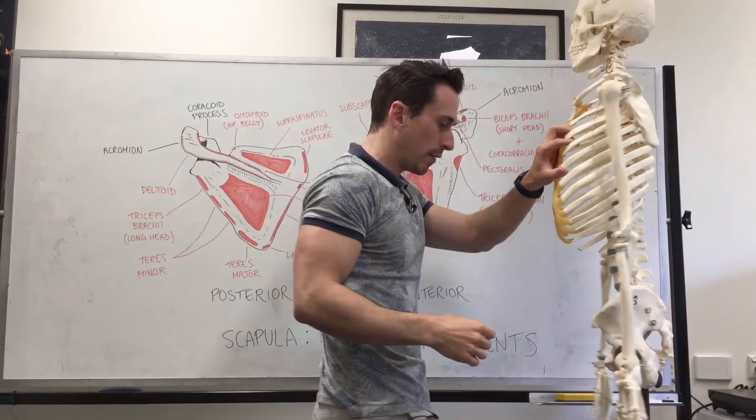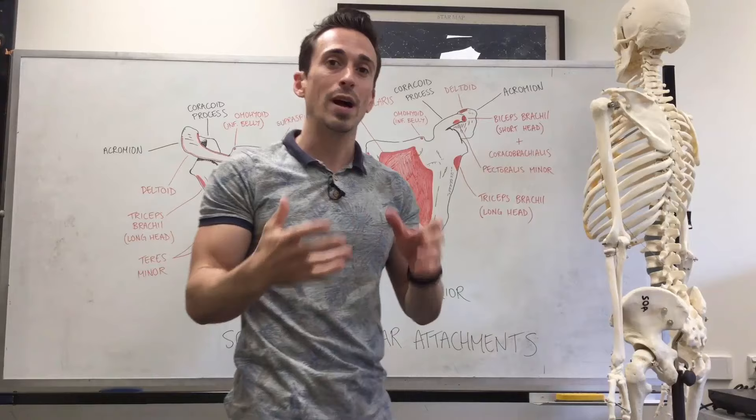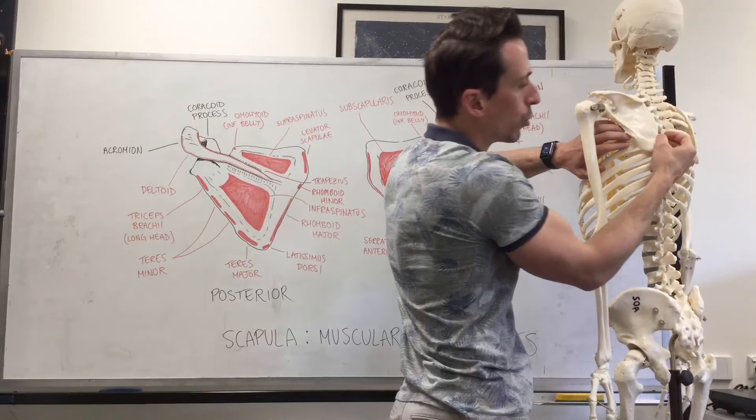So that's elevation and depression. What about protraction and retraction? Protraction is bringing that scapula around the rib cage, and the prime mover for this is the serratus anterior. The serratus anterior has its origins on the first eight ribs and attaches to the medial border of the scapula. When it contracts, it brings that scapula through.